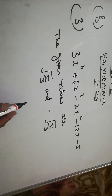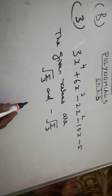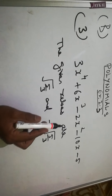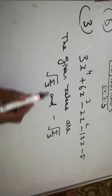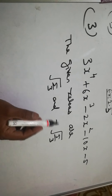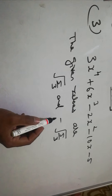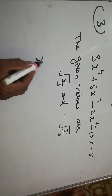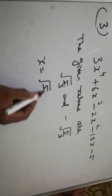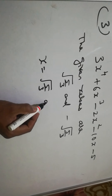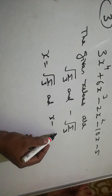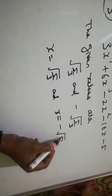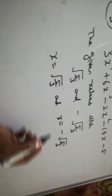Exercise 2.3, question number 3: 3x⁴ + 6x³ - 2x² - 10x - 5. The given zeros are √(5/3) and -√(5/3). So we take x = √(5/3) and x = -√(5/3) as the other zeros.